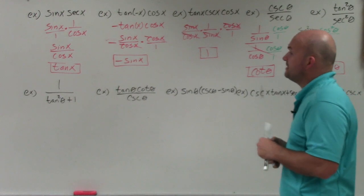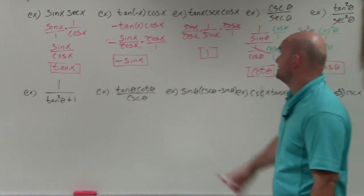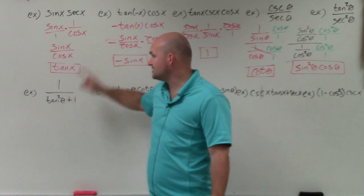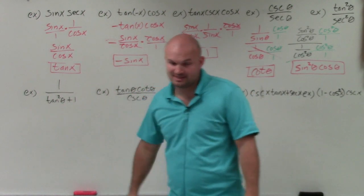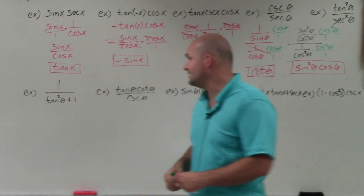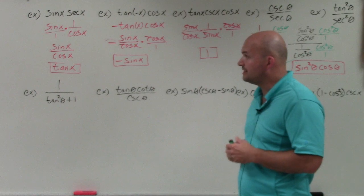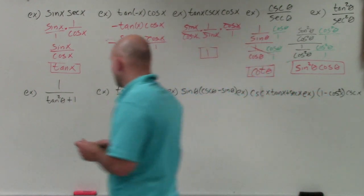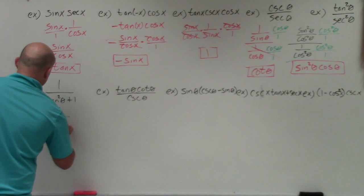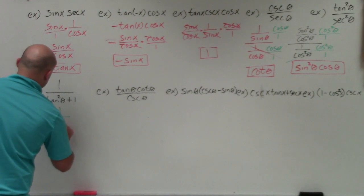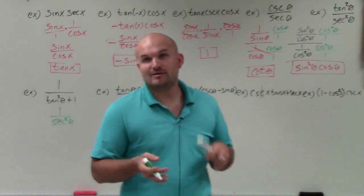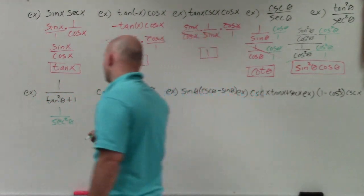Now we need to make sure we know the Pythagorean identities. In this case, tangent squared plus 1 is the exact same thing as secant squared of theta. So I can rewrite the expression as 1 over secant squared of theta. And 1 over secant squared of theta can be rewritten as cosine squared of theta.